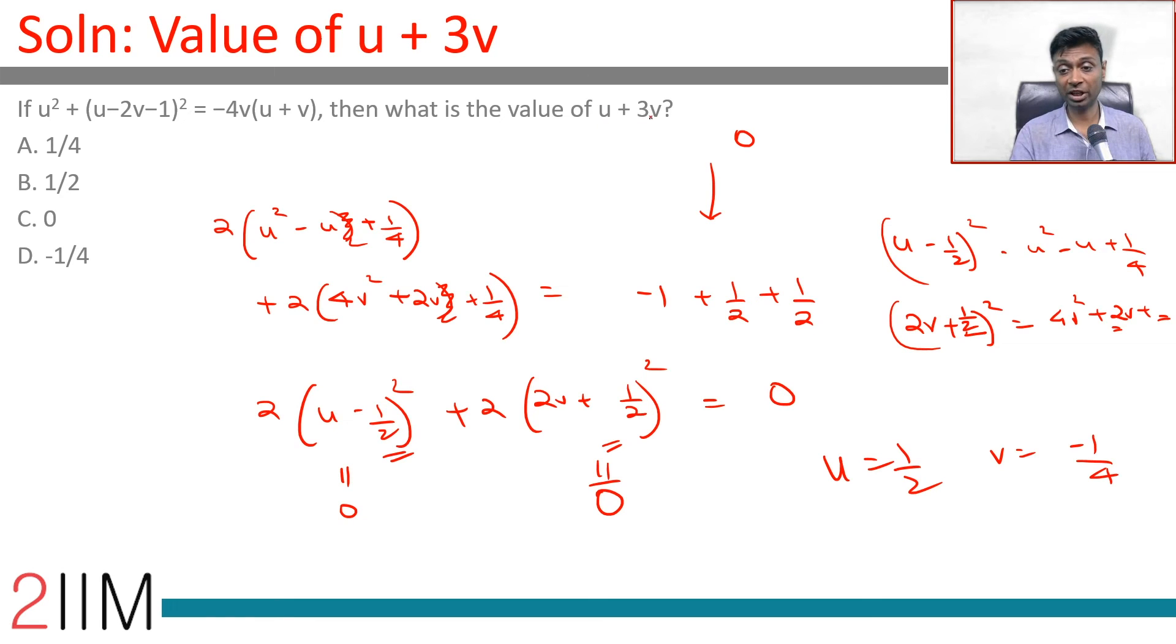We want to find u plus 3v that is 1 by 2 minus 3 by 4 which is minus 1 by 4 which is this value.